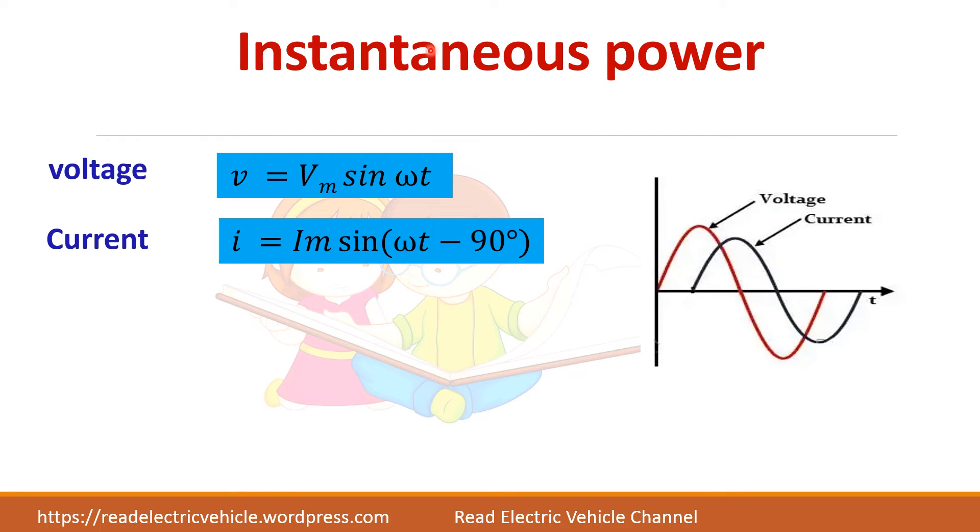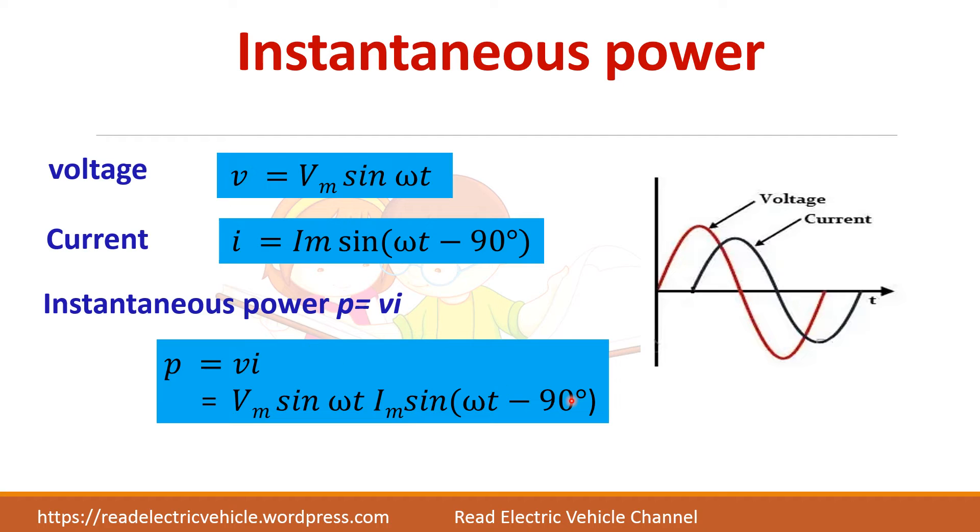Next we will calculate the instantaneous power. So power is equal to V into I. You multiply these two. So here let us multiply the two waveforms. I am extending the current waveform till zero. If you see here, during this first interval voltage is positive, current is negative. So the power will be the product of plus into minus, which gives you minus. So power is negative here.